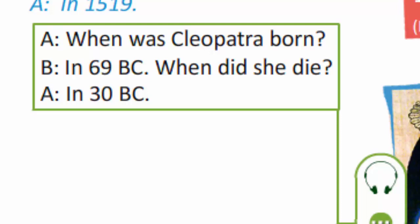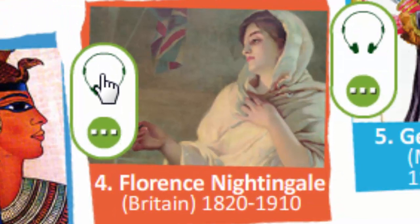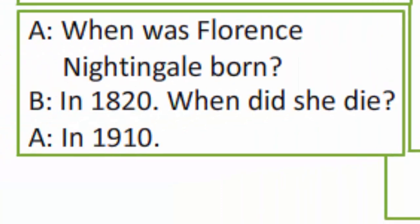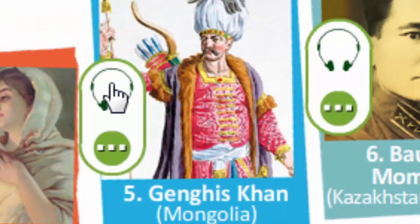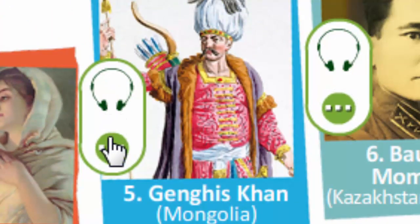When was Florence Nightingale born? In 1820. When did she die? In 1910. When was Genghis Khan born? In 1162. When did he die? In 1227.